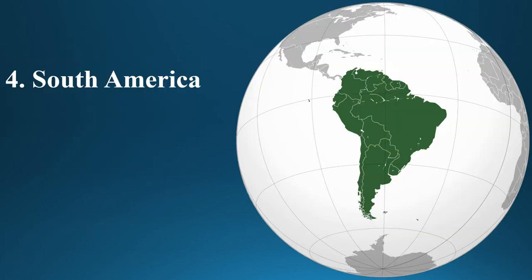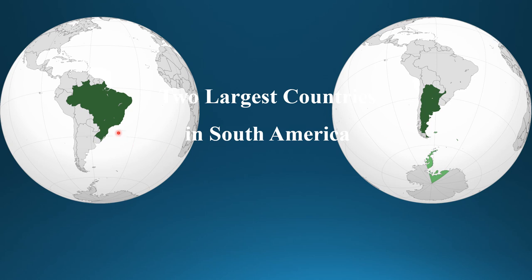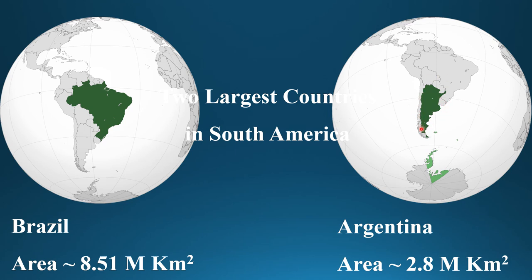South America has 12 countries and two dependent territories. Its area is 17.8 million square kilometers, making it the fourth largest continent in the world. The two largest countries in South America are Brazil and Argentina. Brazil shares land borders with every country in South America and its total area is 8.51 million square kilometers. Argentina is the second largest country in South America, with an area of 2.8 million square kilometers.